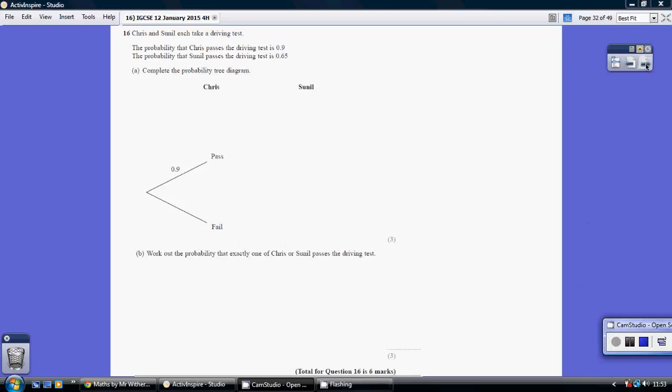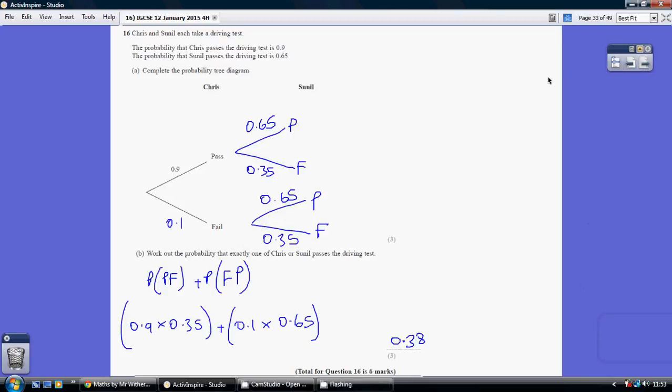Question 16, fairly straightforward. Part A: Chris's passing probability is 0.9, so failing is the rest to make it up to a whole, so 0.1, because 0.9 and 0.1 is a whole.